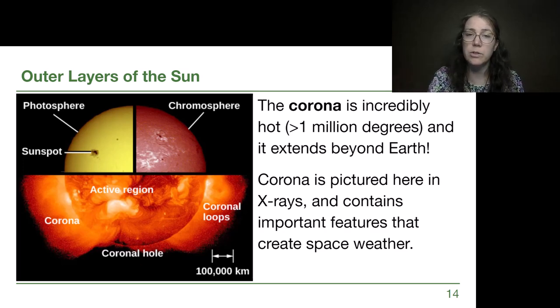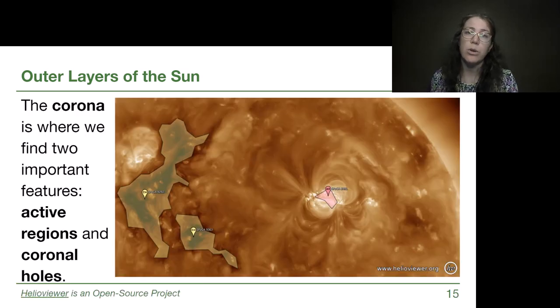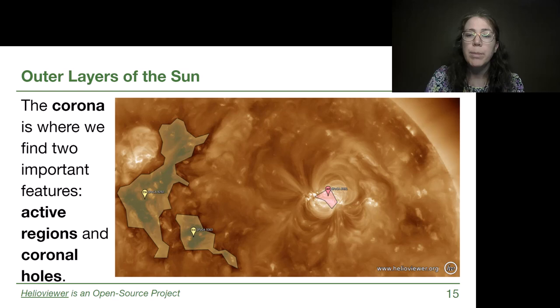These are all important features of space weather. And so that's something that we'll be talking about more in an upcoming video. But I do want to make sure to note these terms while we're introducing these different terms and vocabulary. The corona is the layer of the sun where the two most important features we want to understand are active regions, which look very bright and have loops of material because of magnetic field, and coronal holes, which look very dark because there is less material trapped there.